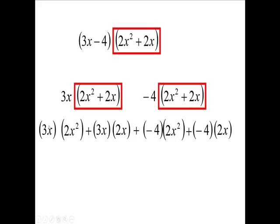So I have 6, 3 times 2 is 6, with 3x's here, 6x cubed. Then you have 3x times 2x. 3 times 2 is 6, and x times x is x squared. So 6x squared.